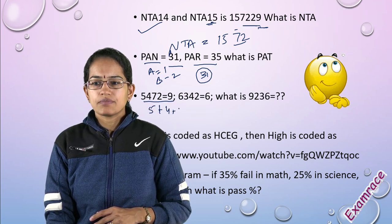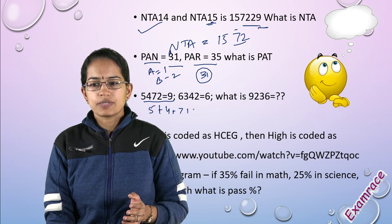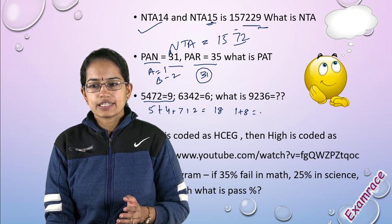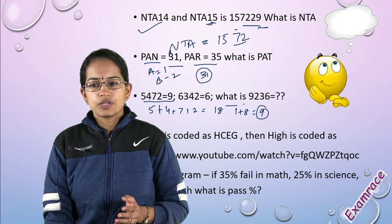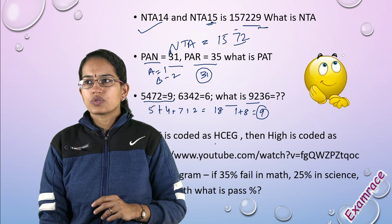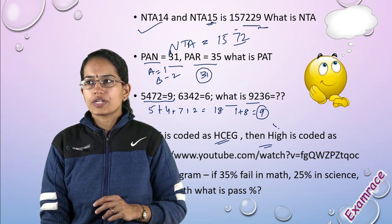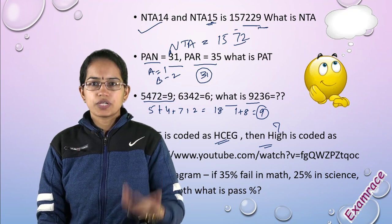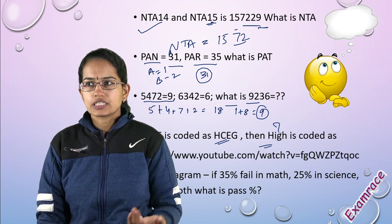Next question: you simply add 5+4+7+2 which gives 18, then 1+8 gives 9. Similarly solve for the next question. We had FACE coded as HCEG, so how is HIGH coded? That was a question we practiced through our coding-decoding classes and live sessions.